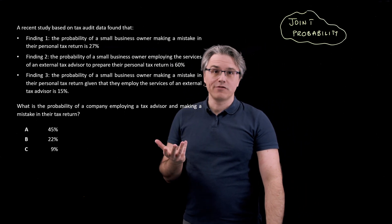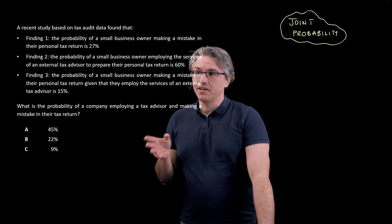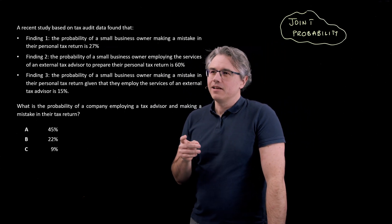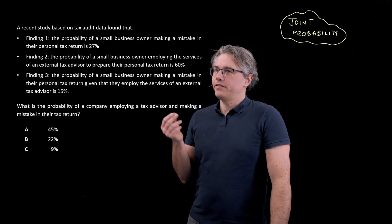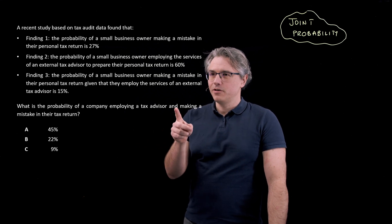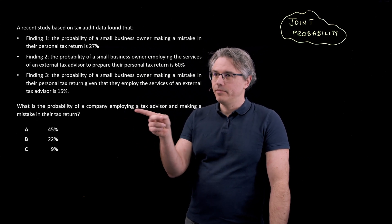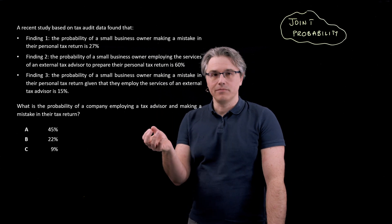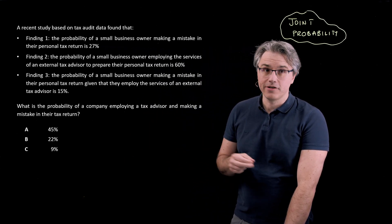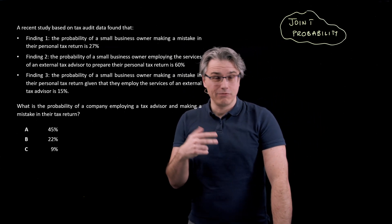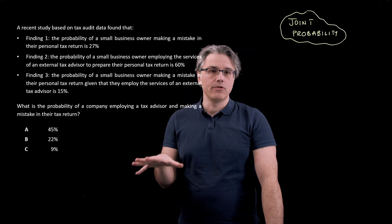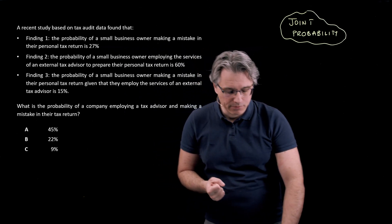The topic for this video is joint probability. The fact that we're discussing joint probabilities is emphasised by the word 'and' in the question: 'What is the probability of a company employing a tax advisor and making a mistake in their tax return?' In a follow-on question, we'll be using words like 'given', which will lead us towards conditional probability.